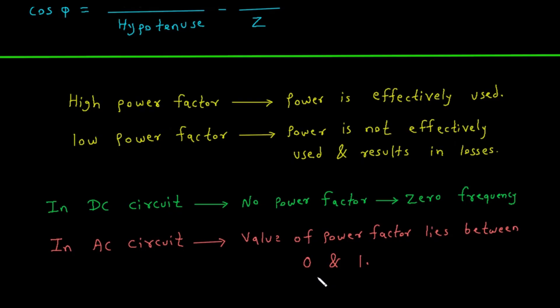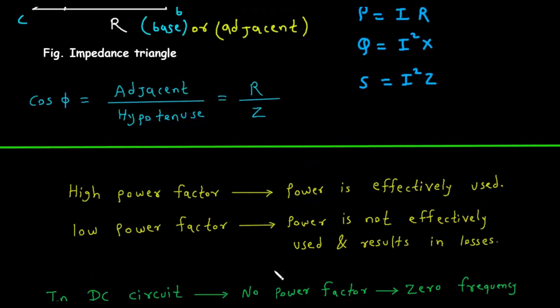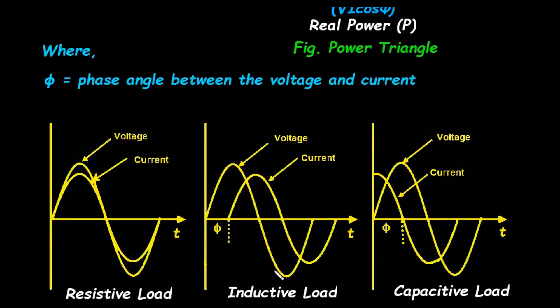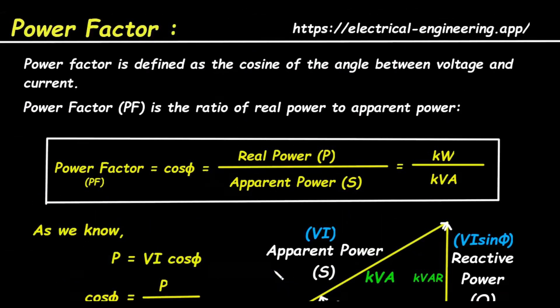In summary, the power factor is a critical measure of electrical efficiency in AC systems. It is the cosine of the phase angle between voltage and current, and it represents the ratio of useful power to total power. Understanding and managing the power factor is essential for designing efficient and cost-effective electrical systems.